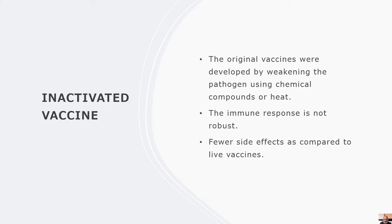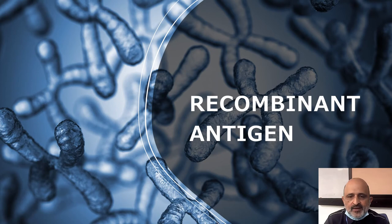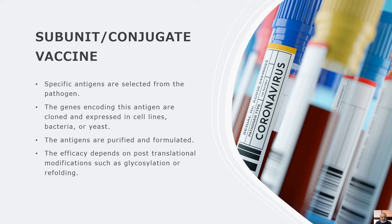Inactivated vaccines are based on the original pathogen and are developed by weakening the pathogen using chemical compounds or heat. The immune response is robust and there are fewer side effects. Recombinant antigens are the vaccine of choice in the case of mass production. A recombinant vaccine such as a subunit or conjugate vaccine involves the selection of specific antigens or antigen-coding genes from the pathogen. These genes are cloned and expressed in cell lines, bacteria, or yeast, and then the antigens are purified and formulated. The efficacy depends on post-translational modifications such as glycosylation or refolding of the proteins.